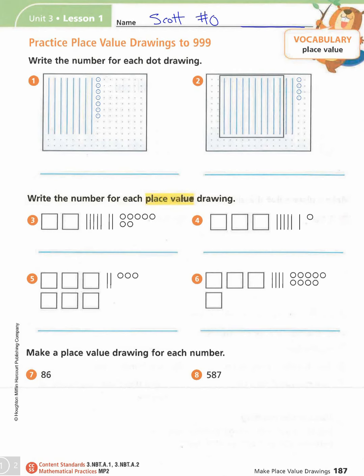In this lesson we're practicing place value drawings to 999, and over here in our vocabulary box it says 'place value.' Let's look at number one. The directions say to write the number for each dot drawing. What they've done is circled dots on this dot paper.